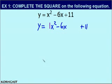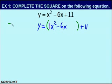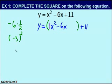Step 3 is to complete the square. The whole point of completing the square is to make x squared minus 6x plus something a perfect square trinomial. Now the B term in this part of our equation is negative 6. We're going to multiply negative 6 by one half, which is negative 3. Then we're going to square the negative 3, which is 9.